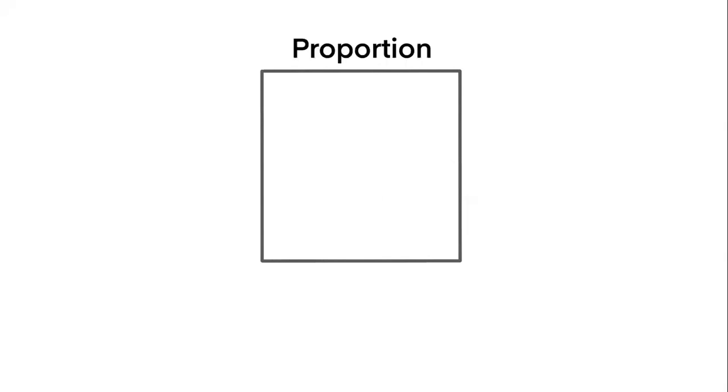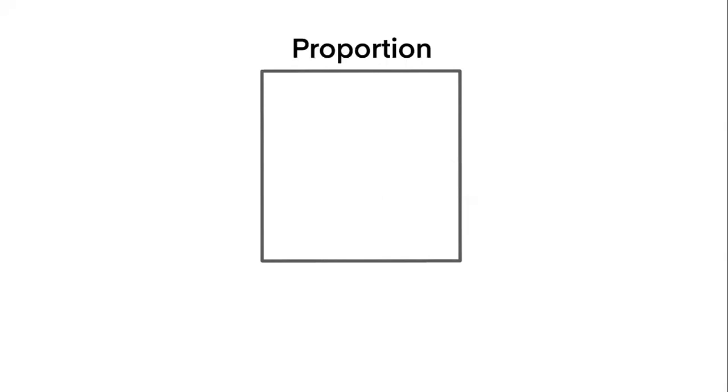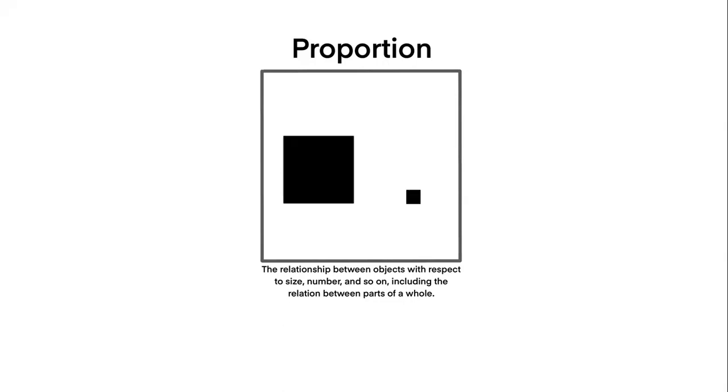Next up is proportion. Proportion is the relationship between objects with respect to size, number, and so on, including the relationship between parts of a whole. So in this case, the proportions of the smaller square to the bigger square are different.